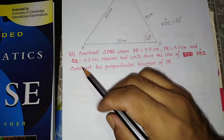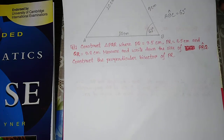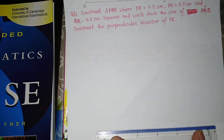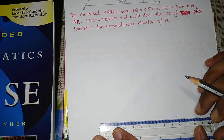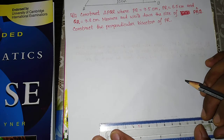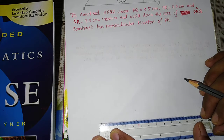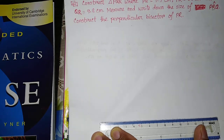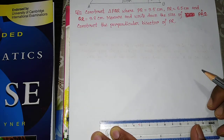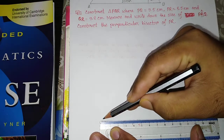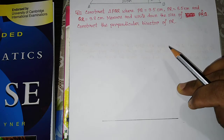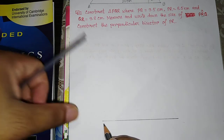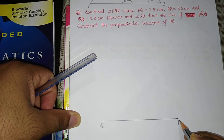I will start with the bigger side. The bigger side is QR, which is equal to 9.8 cm. So I will start by drawing QR first. This is the 9.8 cm length, and it is QR. So we have a point Q and we have a point R.